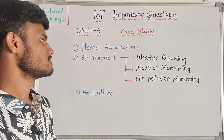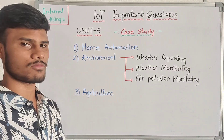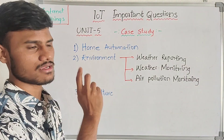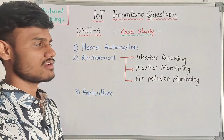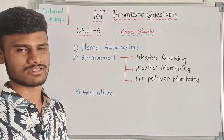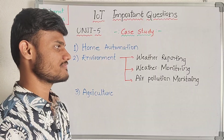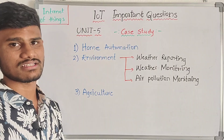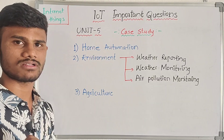Next, environment — how it is used in IoT. We have three concepts: weather reporting and monitoring, and air pollution monitoring. If we don't have air pollution, we need to monitor it. The diagram is a must for these questions.